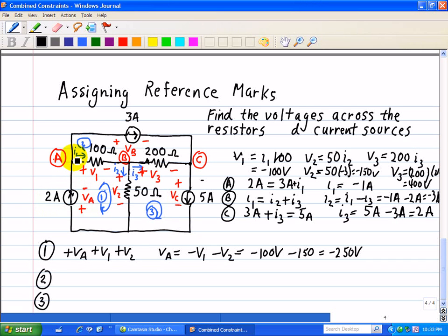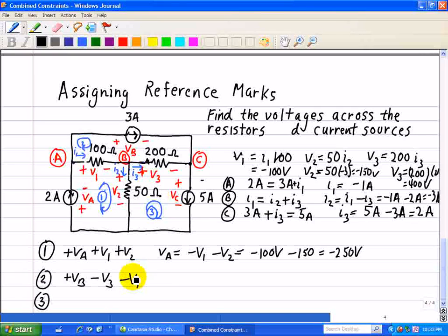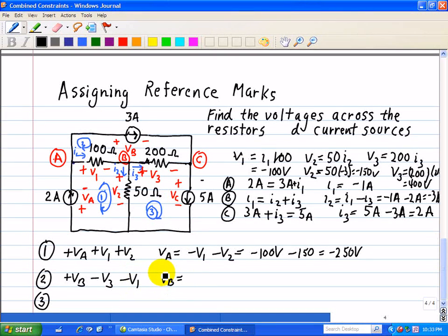For loop 2, we'll start right here, so it's plus VB minus V3 as we go around here and minus V1. So VB is equal to V1 plus V3. V1 is minus 100 volts and V3 is equal to plus 400 volts, so the voltage across VB is 300 volts.